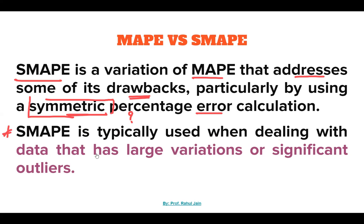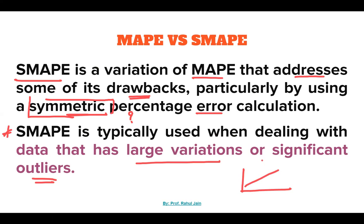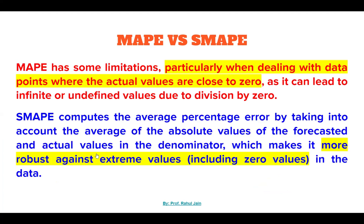SMAPE is typically used when dealing with data that has large variations or significant outliers. For example, if you are performing a regression technique and some data points are very far away from the mean line — that is, extreme values or outliers — then we can utilize SMAPE. There might be some disadvantages when calculating such data using MAPE. MAPE has limitations, particularly when dealing with data points where actual values are close to zero.